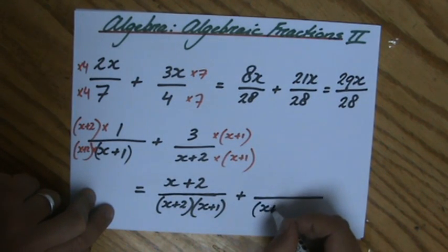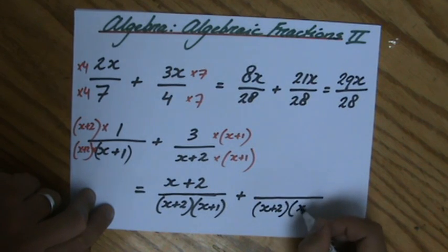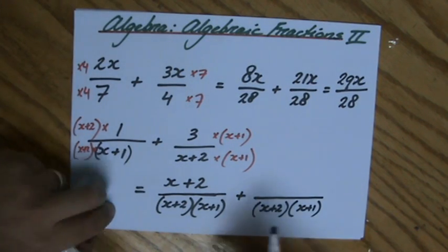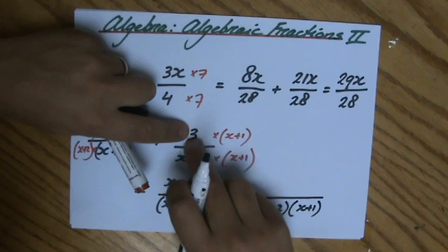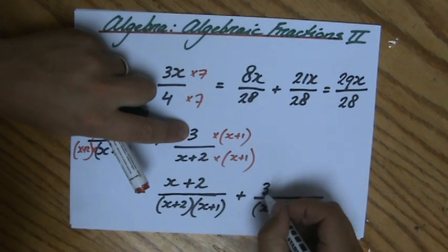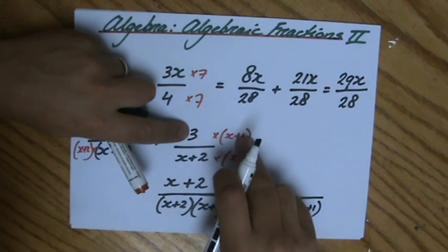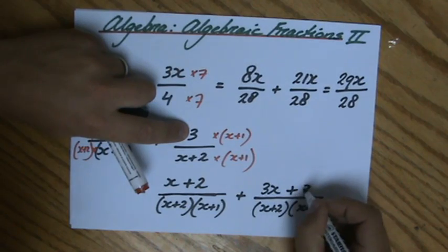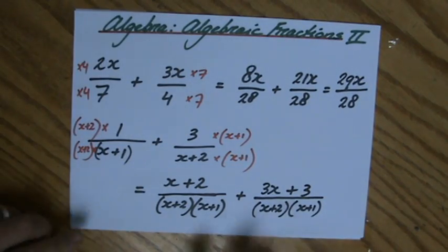Plus, and then my second fraction: I'll start with the denominator (x+2)×(x+1), again in brackets please. And now be careful, it's 3×x which is 3x, and 3×1 which is 3.